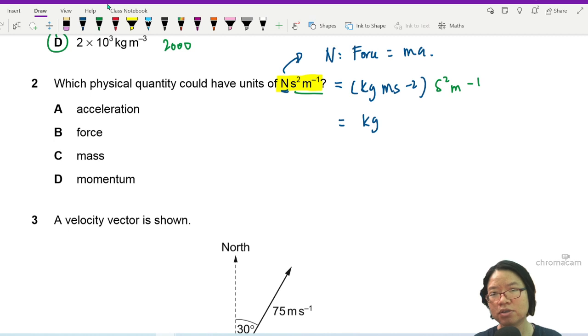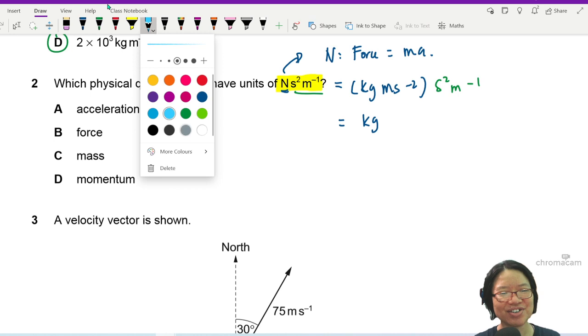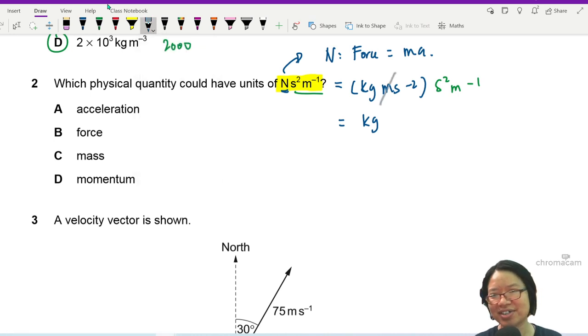right? So, hey, everything cancels off. Very nice. So, if everything cancels off, like this one and this one is bye-bye and this one is bye-bye, then when you are left with kg, then the answer will be mass,